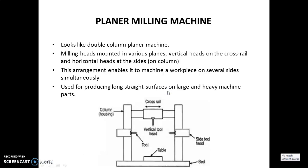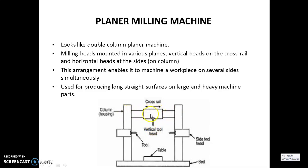Let's start with the planar milling machine. This is a very important milling machine because it has two columns over which side tool heads are mounted. Because of the presence of columns, it looks like a double column planar machine in which the workpiece to be cut is mounted on the table. Here the cross rail is also carrying a vertical tool head supported by the columns.